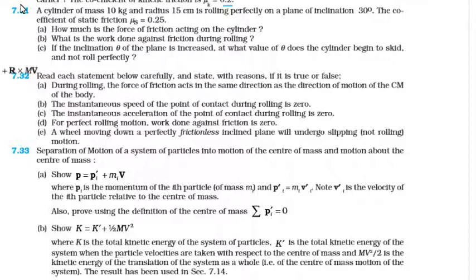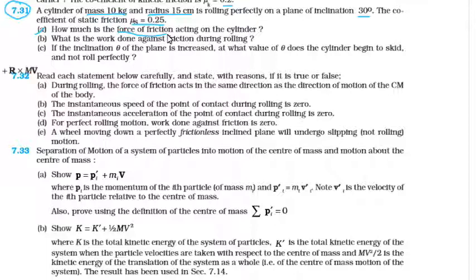Today we will start with question number 7.31: A cylinder of mass 10 kg and radius 15 cm is rolling perfectly on a plane of inclination 30 degrees. The coefficient of static friction mu_s is equal to 0.25. Part A: How much is the force of friction acting on the cylinder? Part B: What is the work done against friction during the rolling? In part A we have to find the force of friction.